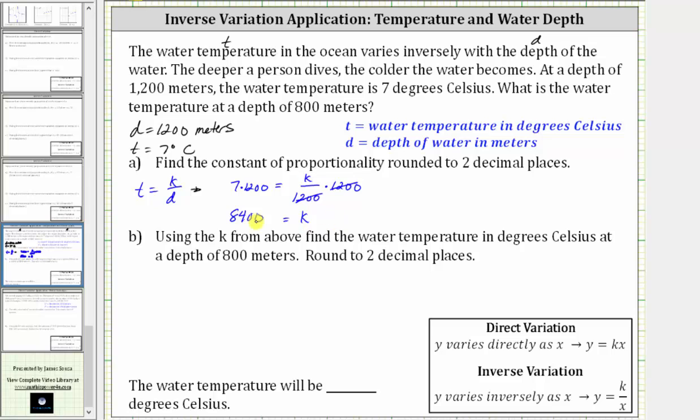So now we know K, the constant of proportionality, is 8,400. Now for part B, using the K from above, find the water temperature in degrees Celsius at a depth of 800 meters. Round to two decimal places.